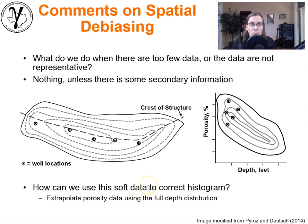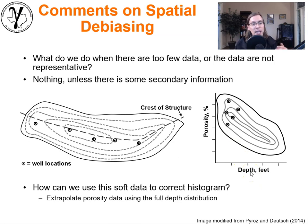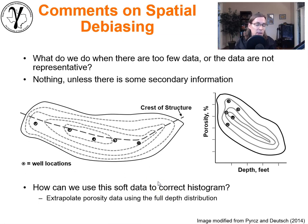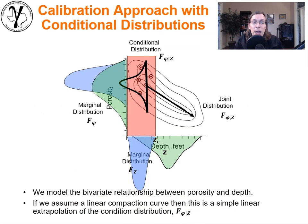So what's the process by which we can fix this problem? What we can do is look at the relationship between porosity and depth. If we have a good understanding of that relationship, and depth is available to us at all locations in the reservoir, we can take advantage of that. Depth is our secondary information, used exhaustively mapped, in addition to a relationship between depth and porosity, to correct the distribution. That's why we call it soft data debiasing, or spatial debiasing. We're going to extrapolate porosity data using the full depth distribution and the relationship between the two.